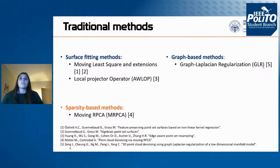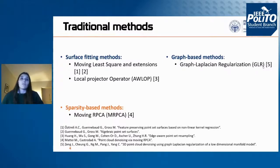Another important class of traditional methods is derived from graph theory. These methods first define a graph on the noisy data and then apply graph total variation regularization. They obtain very good results at low noise levels, actually outperforming other traditional methods. But again, when the amount of noise increases, the graph construction becomes unstable and performance degrades.